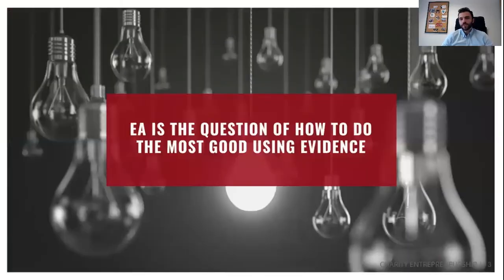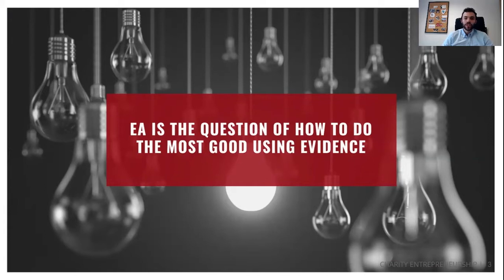Effective altruism is a little bit aimed towards this question: how do we do the most good using evidence? Now, this seems like a question that has some fairly simple answers, but it gets more complex, as most things do, the more you think about it. So let's break it down into components to get into what we're really talking about.